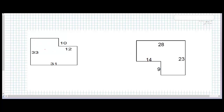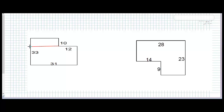Now we have a composite figure. To solve it, we cut the shape into two rectangles — shape 1 and shape 2. For shape 1, we need to find the missing length: 31 minus 12 equals 19, so the length is 19. Area of shape 1 equals 10 times 19, which is 190 units squared.